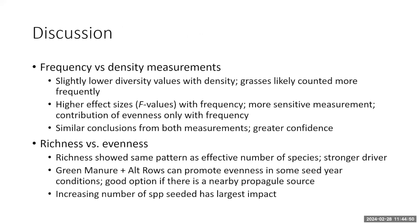Using the density method for evenness, there are no significant differences. We got slightly lower diversity values using the density method compared to the frequency method — likely because grasses were counted more often when counting individual density. We saw a higher effect size using the frequency method, suggesting it may be a more sensitive method, which is good news since it avoids having to count every individual within every species.